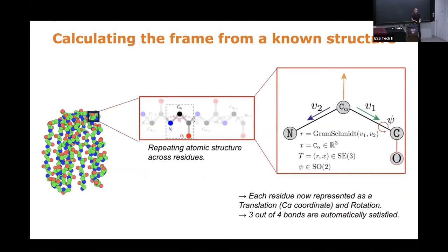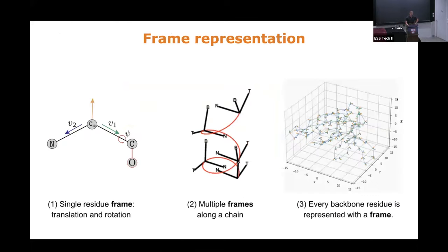Given a structure, how do I get the frame description? Pick an alpha carbon, draw a vector from it to the position of the nitrogen, draw another to the other carbon — you get two vectors, you orthogonalize them, and you get the local coordinate system. So you have the position of the alpha carbon and the local coordinate system — that is a frame. You can extract those frames for all residue positions in the structure. Our task then is to learn to generate this collection of frames as representations of protein structure. The protein is a sequence of frames that you collect together.